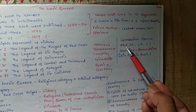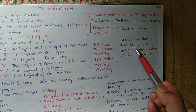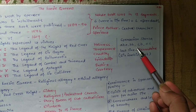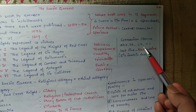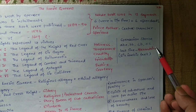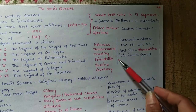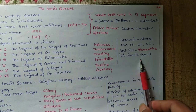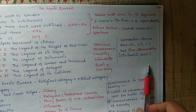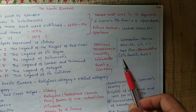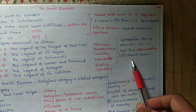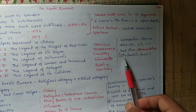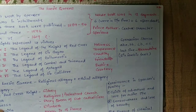The Spenserian stanza rhyme scheme is A-B-A-B-A-B-C-B-C-C, and the last line is an Alexandrine, which consists of six iambic feet.